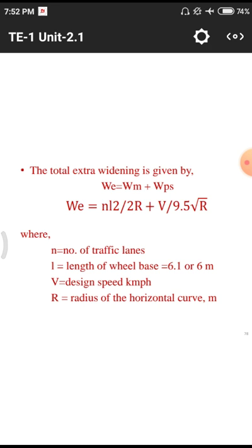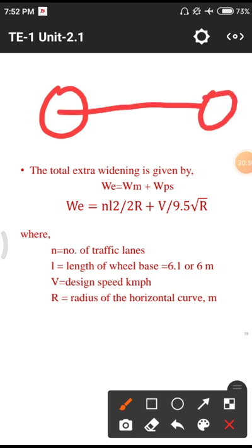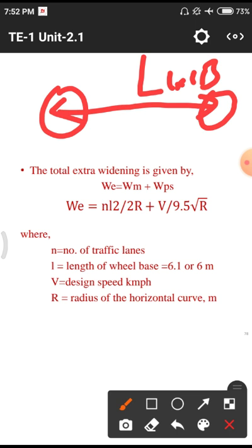The wheelbase is the distance between the front axle and rear axle of a vehicle. This wheelbase differs for different vehicles: for a tractor we have different tire configurations, for lorries some have two axle sets and others have three, and for cars we have only two axles. The average wheelbase is considered as 6 meters here.